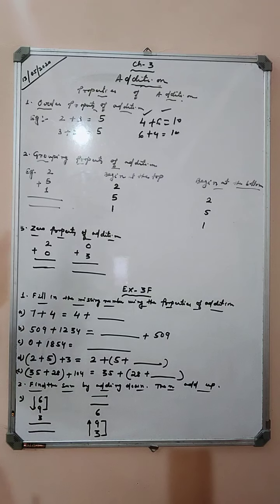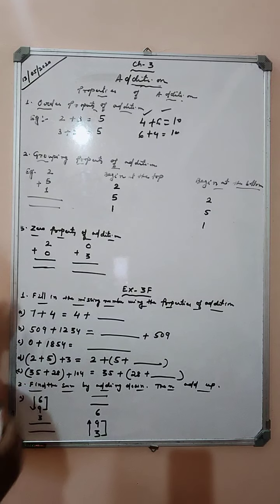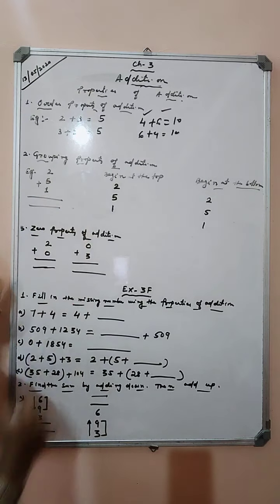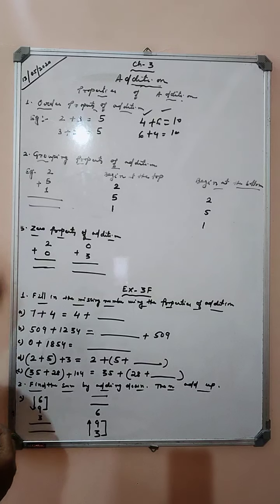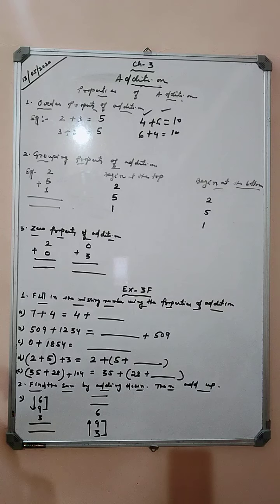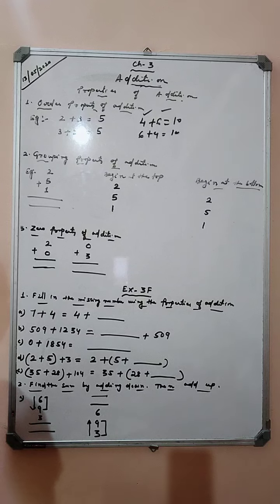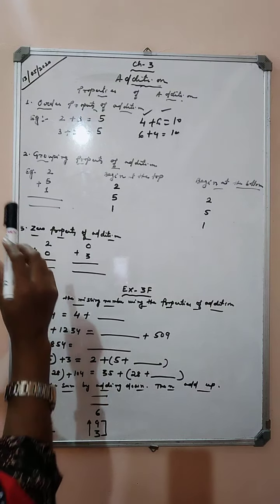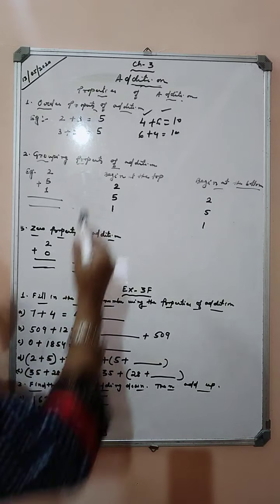Next property is the grouping property of addition. Students, if we have more than 2 numbers — for example, I have taken 3 numbers here — how will you add? We can add these numbers by grouping method. We have to add in a 2-step process: first we add any 2 numbers, and then we add that result to the 3rd number.